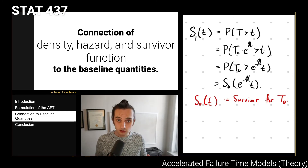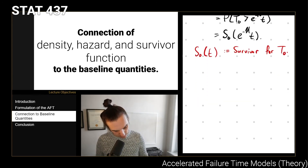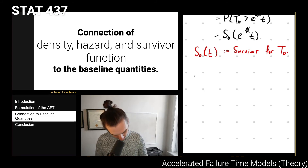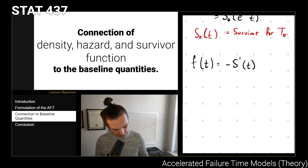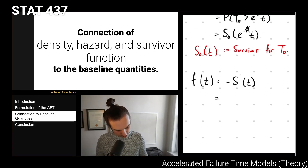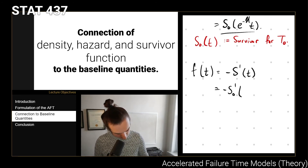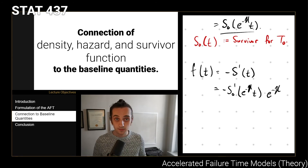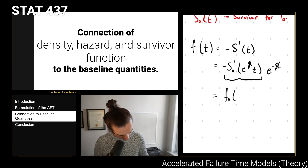We can relate the distributions of t0 to the distribution functions of t. The density function f(t) equals the negative derivative of the survivor function. Differentiating S0(e^(-eta)*t) with respect to t using the chain rule gives: f(t) = -S0'(e^(-eta)*t) * e^(-eta). Since the negative derivative of S0 is exactly the density of t0, we get f(t) = f0(e^(-eta)*t) * e^(-eta).